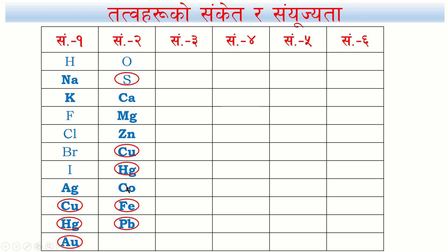These are metals and non-metals. Copper and mercury also appear in the valency 2 list. Valency 3 elements include: nitrogen, aluminum, gold, and iron. These elements have a valency of 3.